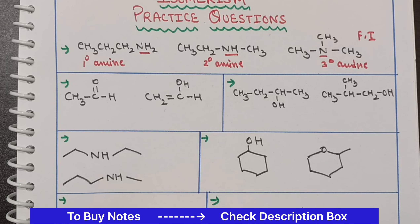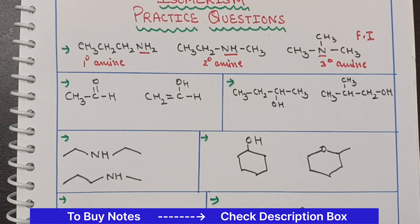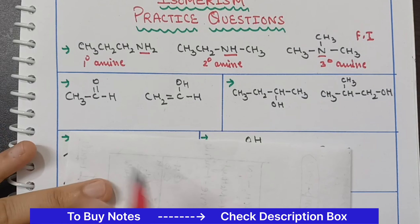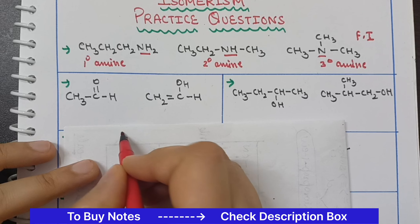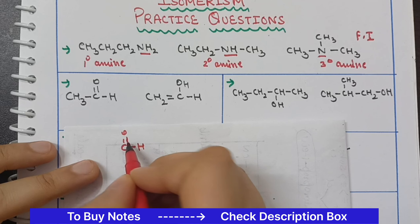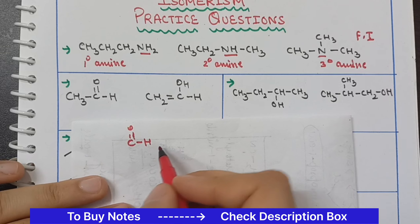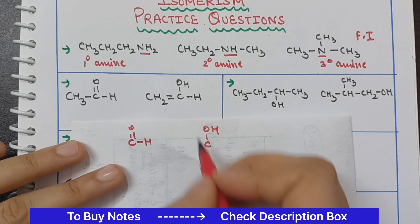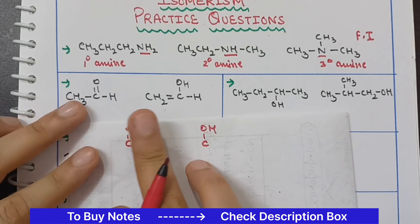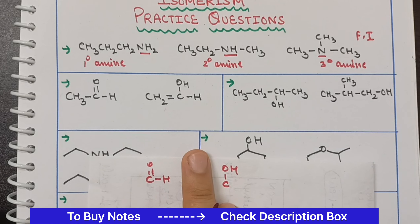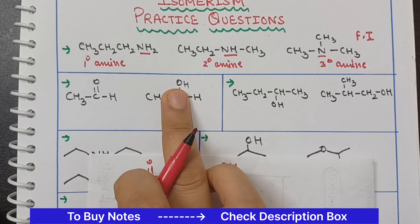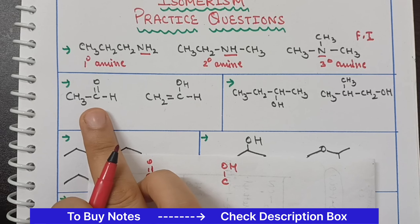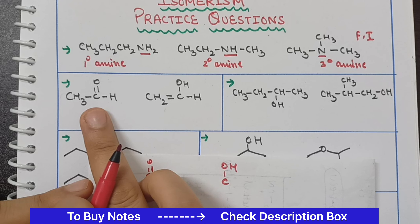Now let's see what the difference looks like. Here you can see a CHO group — this is an aldehyde group. And here you can see an OH, so this is alcohol. Now you will say that the molecular formulas are the same but the functional group here is OH (alcohol) and here is aldehyde, so you will say these two are functional isomers.